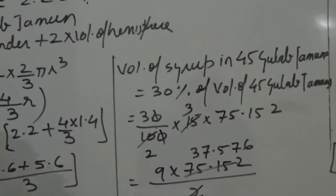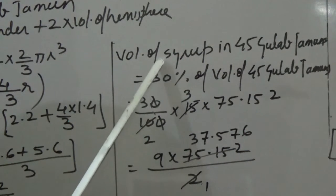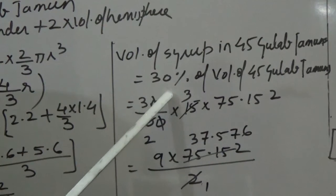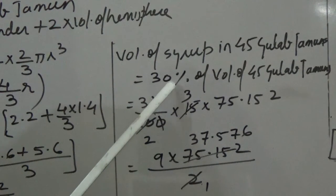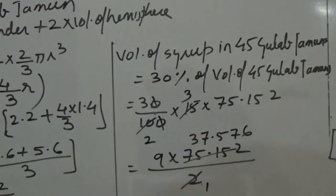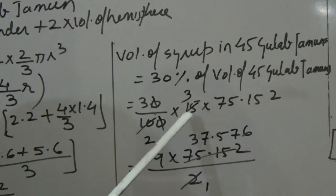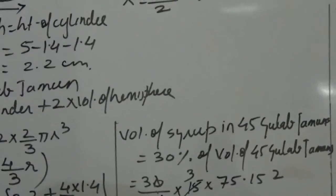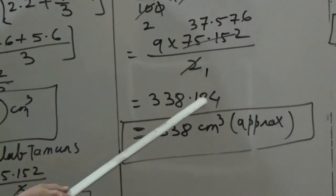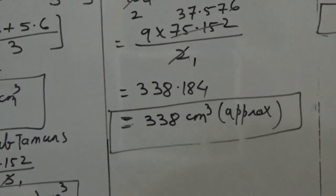Since the syrup is 30% of the volume of 45 gulab jamuns, volume of syrup = (30/100) × 15 × 75.152. After cancellation, this gives approximately 338 cm³ as the volume of syrup in 45 gulab jamuns.